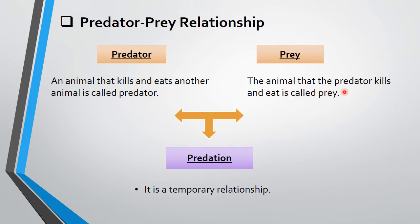The animal that the Predator kills and eats is called Prey. The relationship between predator and prey is called Predation. It is a temporary relationship — when a predator comes and eats the prey, a relationship is formed. Once the feeding is done, the relationship ends. So this is a very short-term, or temporary, relationship.